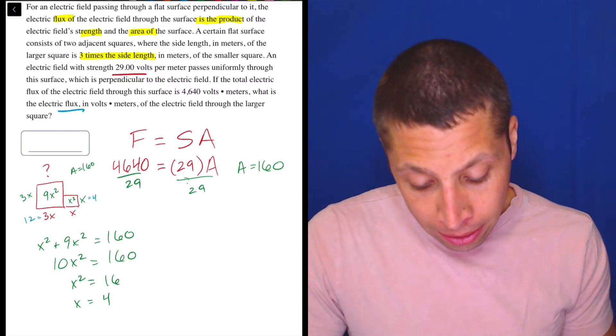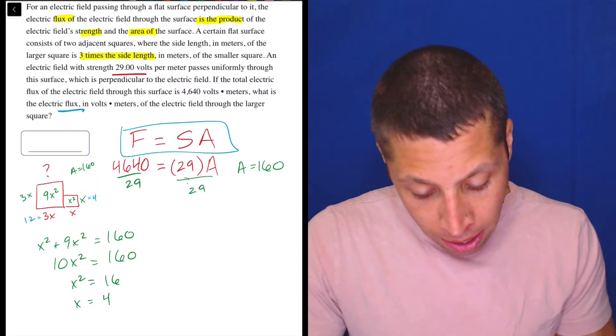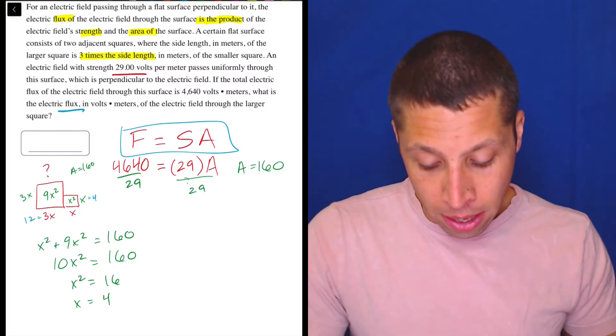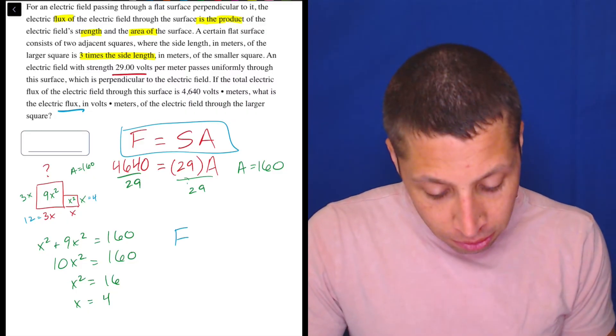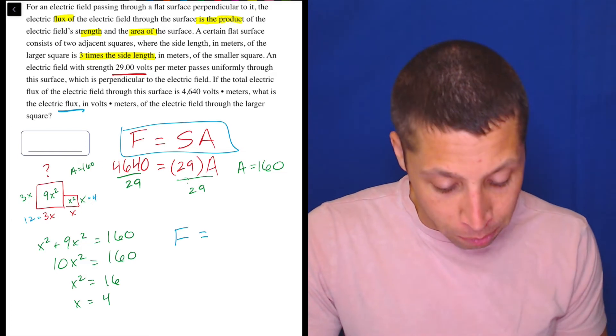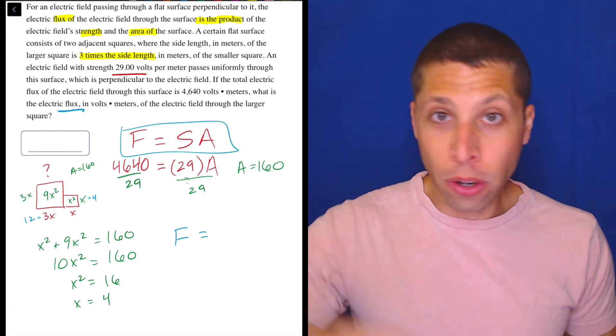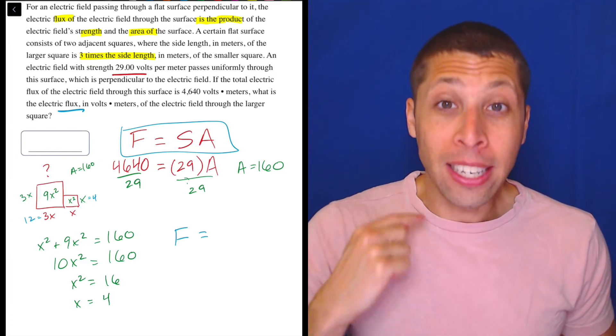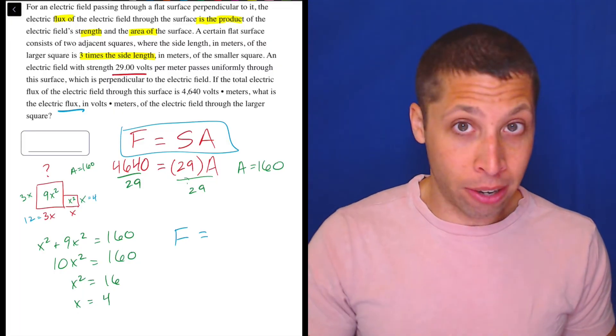So let's go back to this formula. The flux is equal to the strength times the area. Well, they want the flux. So I know that that's going to be a variable that means in order to use this formula again, I need to have been given the strength and the area.